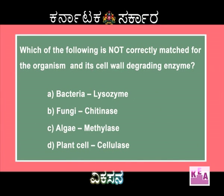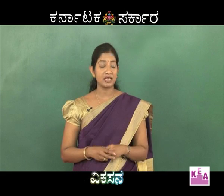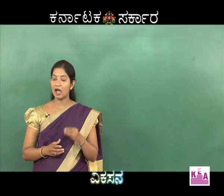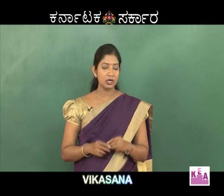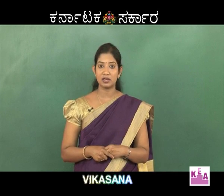Question: Which of the following is not correctly matched for the organism and its cell wall degrading enzyme? Options: (a) Bacteria — lysozyme, (b) Fungi — chitinase, (c) Algae — methylase, (d) Plant cell — cellulase. We have to find out whether the enzyme in each set can actually degrade the cell wall of that particular organism.